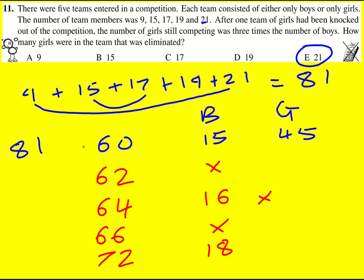and it must be this one here. We had 81 players in total, we eliminated the team of 21 to leave 60. We've then got number of girls three times the number of boys. So overall, divide by four to get the number of boys, because the ratio three to one means the fraction of boys is a quarter.